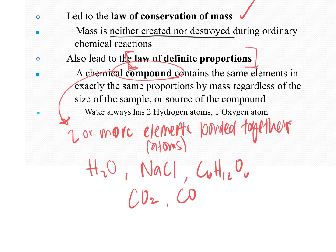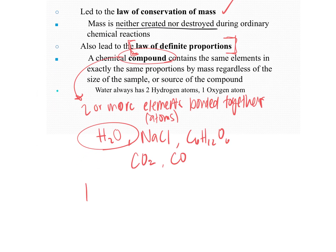The second law is called the law of definite proportions. It says a chemical compound contains the same elements in exactly the same proportions by mass, regardless of the size of the sample or source of the compound. Once water was established to be H2O, that will always be that formula. We can't change the ratio because if we do, the properties of that compound will change.